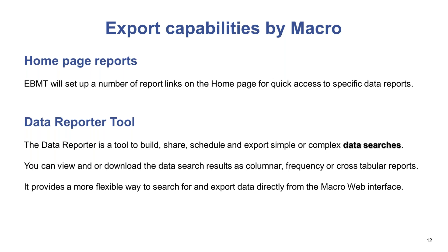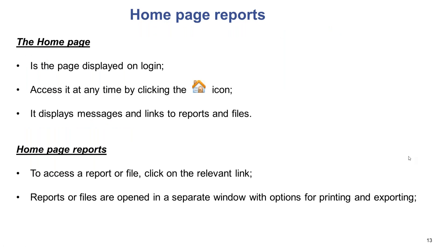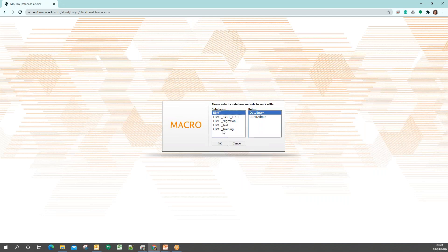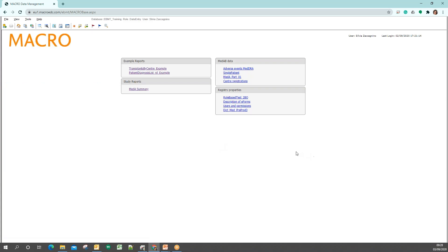The homepage is the page displayed on login to Macro. You can also access it by clicking the home icon; it displays messages and links to reports and files. To access a homepage report, you just click on the relevant link and the report or file will open in a separate window with options for printing and exporting. So after logging into Macro, this is the homepage you will see — there are some examples of reports that my colleague Tunde uploaded for this training, plus a dictionary of the database which can be quite useful.